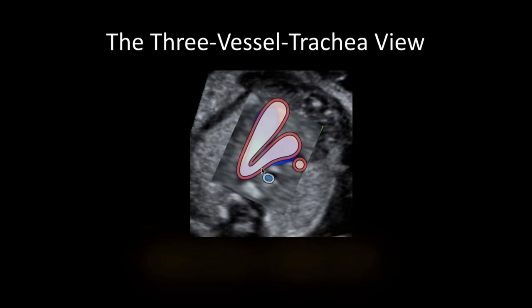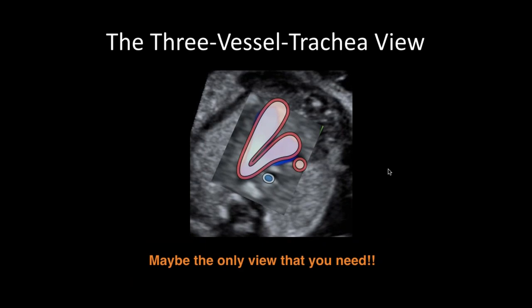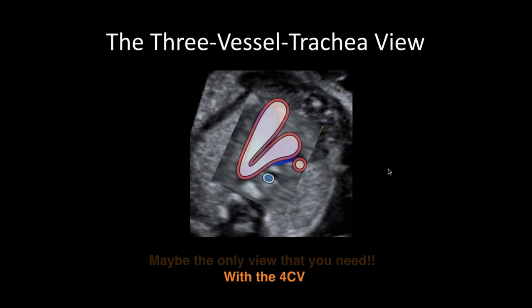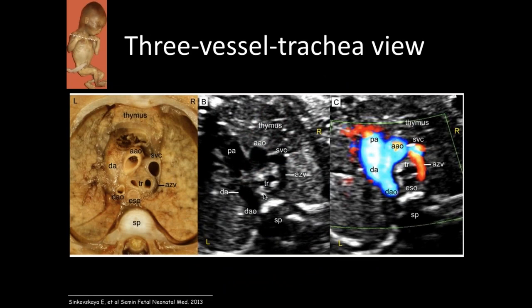This is a very important view. This slide shows an anatomic specimen at the level of the three-vessel trachea view, the corresponding ultrasound in grayscale mode, and the corresponding ultrasound in color Doppler mode. I want to highlight the pulmonary artery, ascending aorta, superior vena cava, the ductal arch, the aortic isthmus to the descending aorta. In this view, you see the azygous vein as it drains into the superior vena cava. Note the location of the trachea — the ductal arch and the aortic arch are to the left side of the trachea.